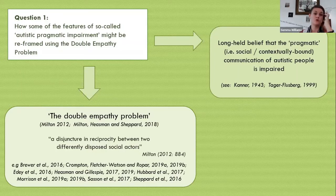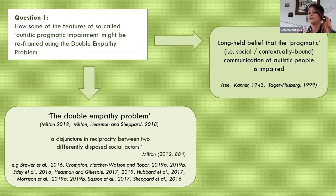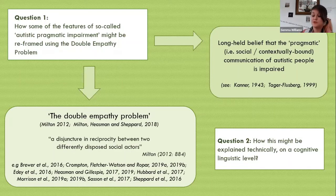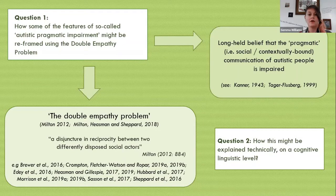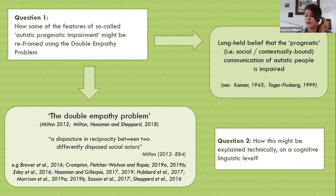The double empathy problem, originally proposed by Damien Milton, argues that the lack of understanding between autistic and non-autistic people runs both ways, due to a disjuncture in reciprocity between two differently disposed social actors. There have been a run of studies in the last few years finding evidence to support this. I wanted to explore how the double empathy problem might reframe what's been thought of as pragmatic impairment on a cognitive linguistic level. To do this, I needed naturalistic conversation data — there were no pre-made corpora of adult autistic conversations available, so I needed to collect my own. This is how the Talking Together project was born.